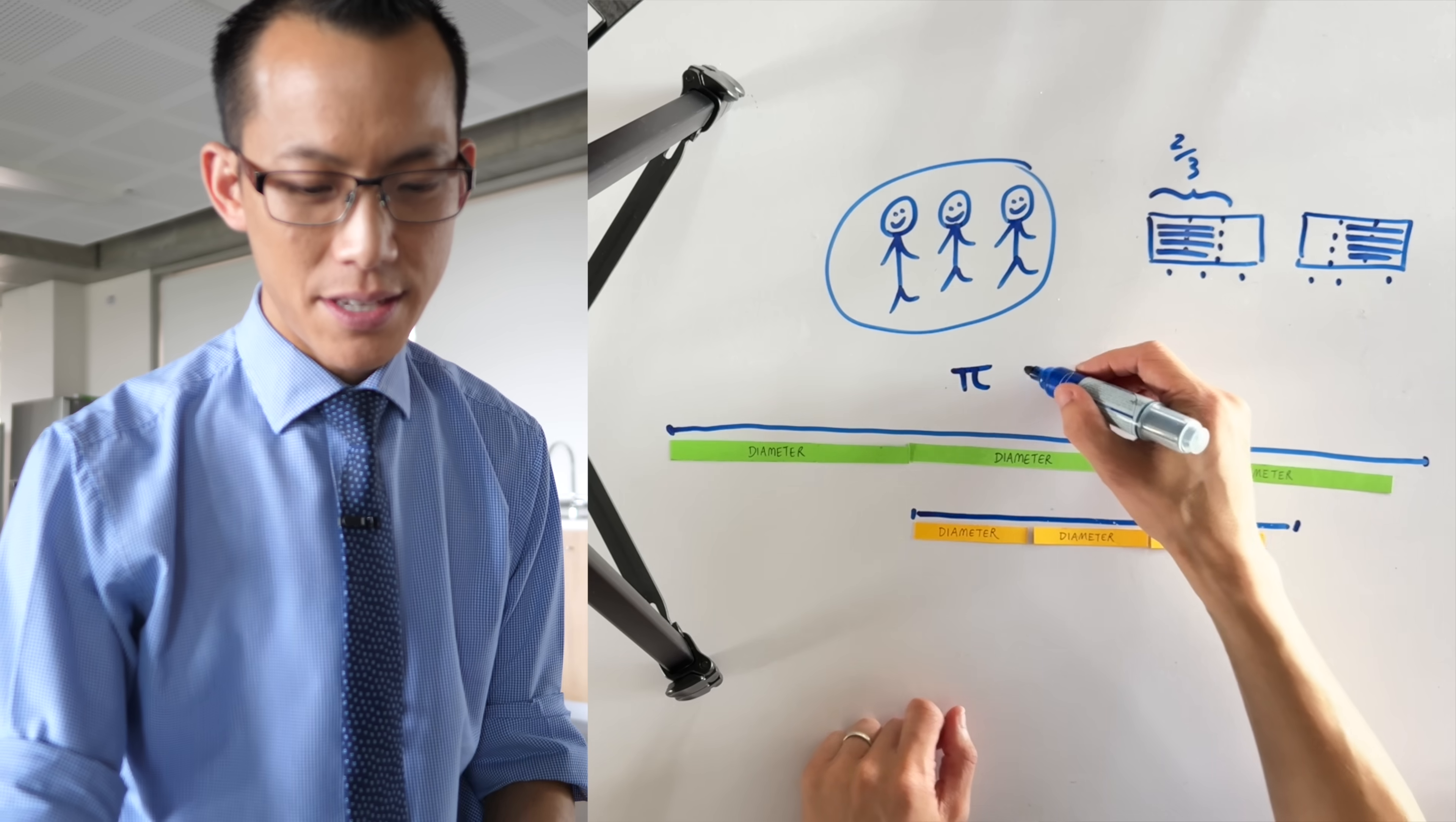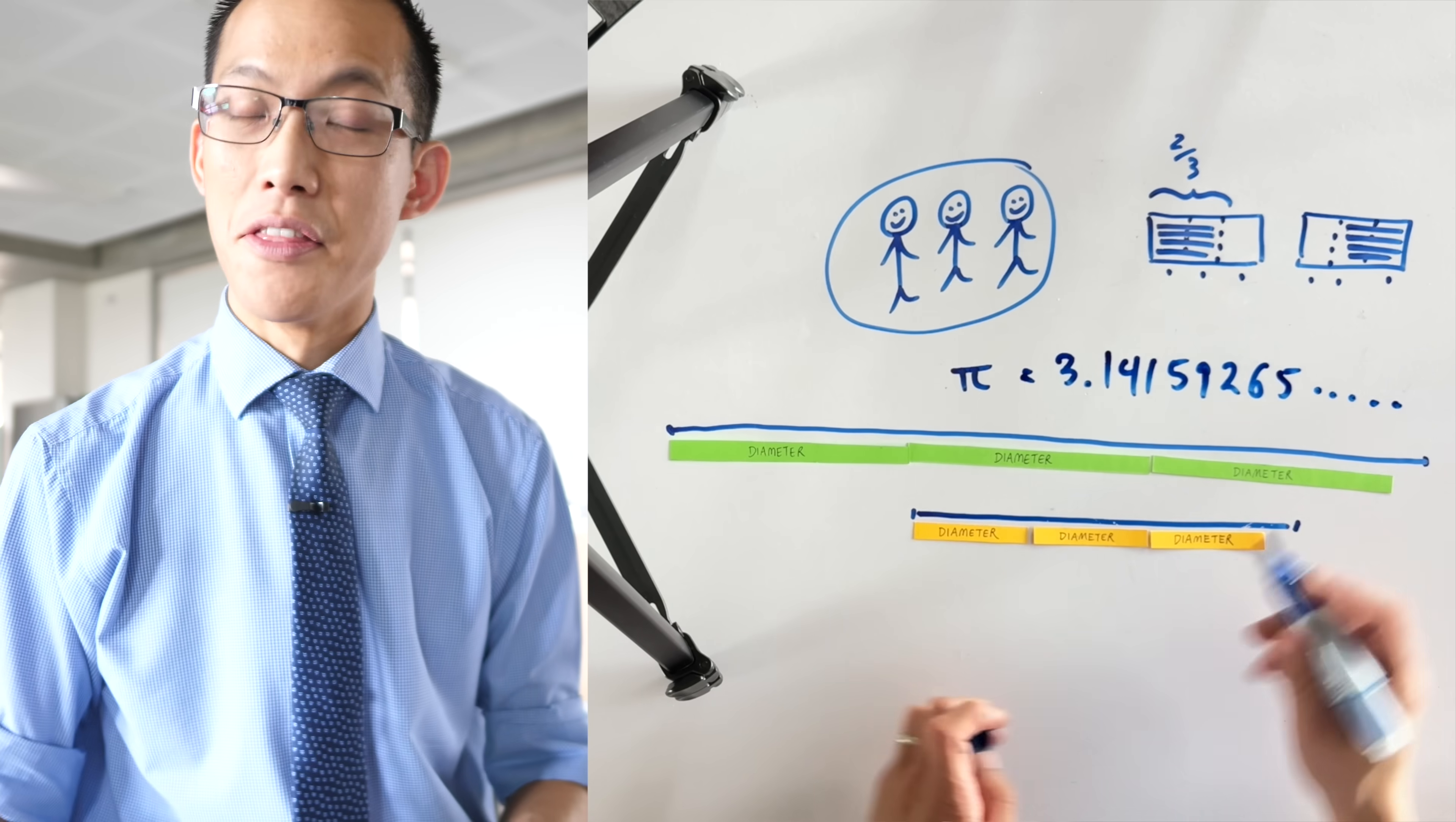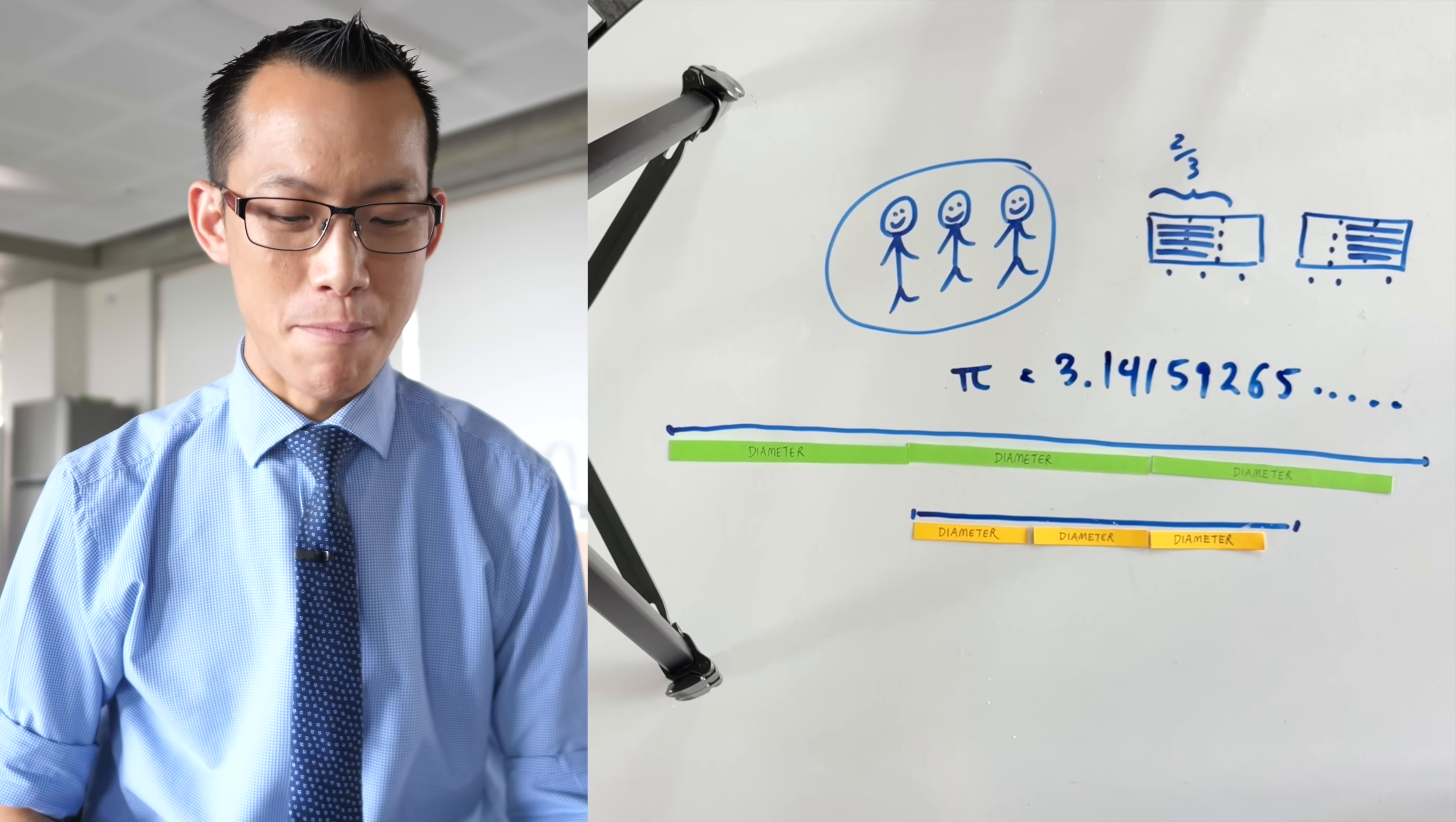That little bit, it turns out, is one, four, one, five, nine, two, six, five, and then those numbers just go on forever, and this is one of the wild things about this strange number pi, one of the reasons why it's so important.